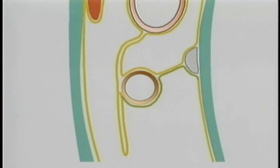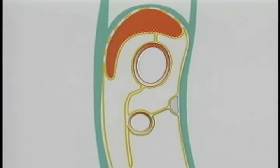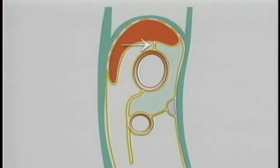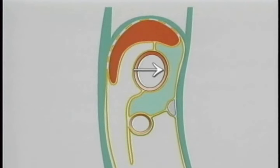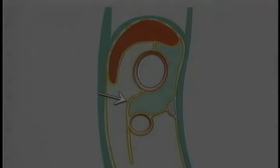The lesser sac lies behind the lesser omentum, the stomach, and this part of the greater omentum — the gastrocolic ligament.